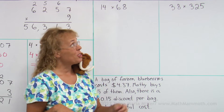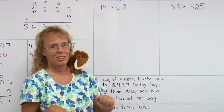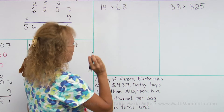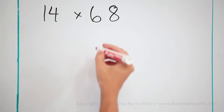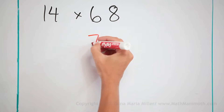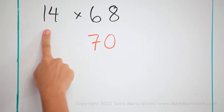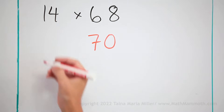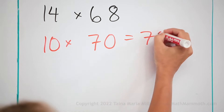Now, let's go on to two-digit times two-digit problems and estimate first. This one, I would round to 70, rounding up. This one, you could round it down to 10, for example, and we will get 700.